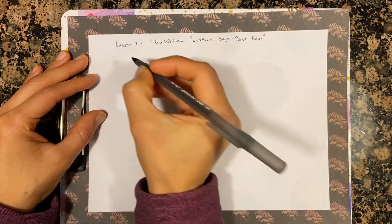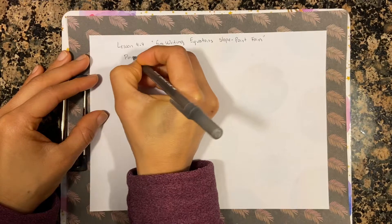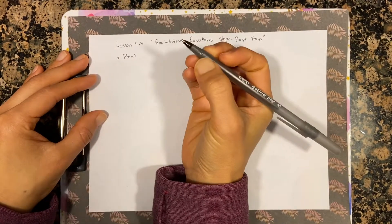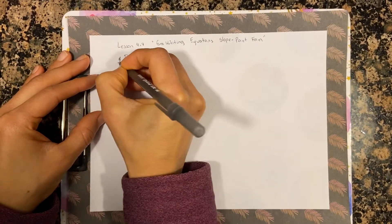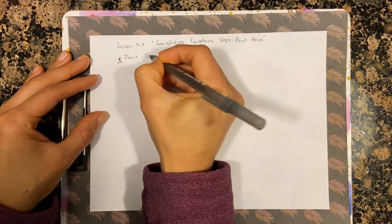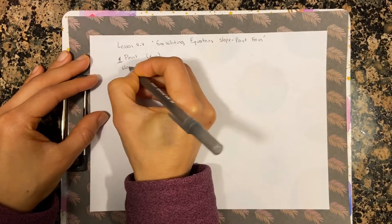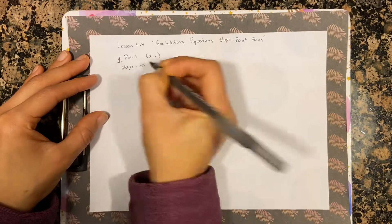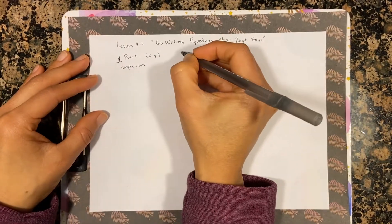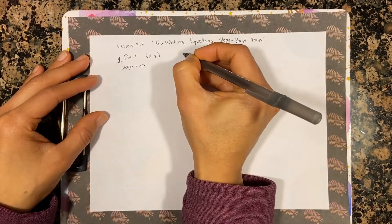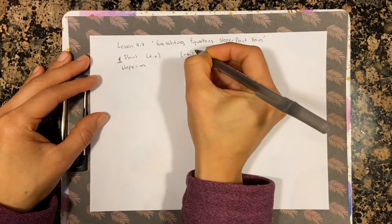For this lesson, you are only given one point, which is (x, y), and you are also given the slope, which is equal to m.